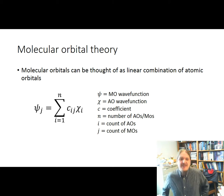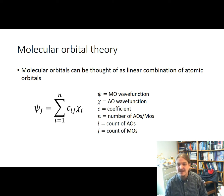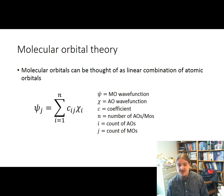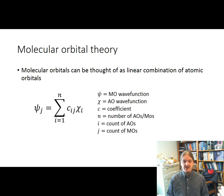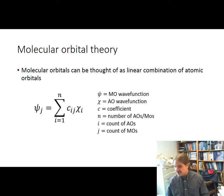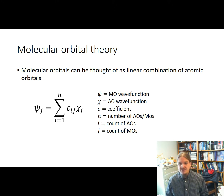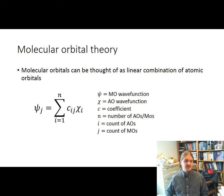This is going to be the limit of my mathiness in this presentation. Molecular orbitals in molecular orbital theory can be thought of as linear combinations of atomic orbitals. This formula kind of sums up what that means, where the Greek letter psi is a molecular orbital wave function, chi is an atomic orbital wave function, c is a coefficient, and the i's and j's refer to the different counts of atomic orbitals and molecular orbitals. So i equals 1 is the first atomic orbital, j equals 2 is the second molecular orbital, and c₁₂ is the coefficient of the first atomic orbital present in the second molecular orbital. n is just the number of atomic orbitals or molecular orbitals.